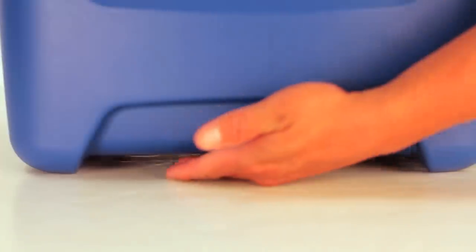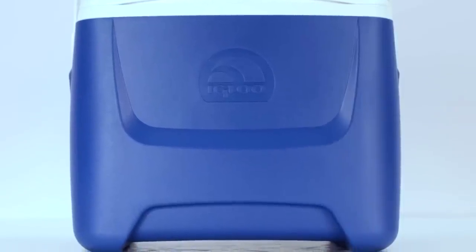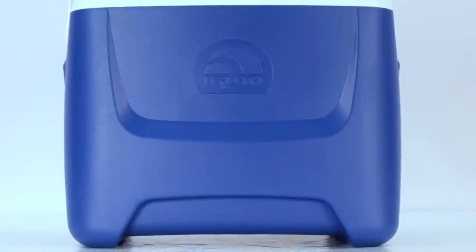The 28-quart Island Breeze has a curved backside designed to fit comfortably against your body. And it comes with Igloo's exclusive CoolRiser technology, elevating the cooler off of hot surfaces for improved cooling performance.